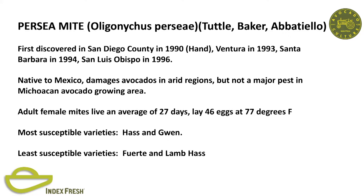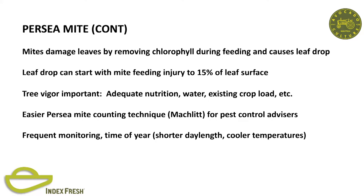The mite was initially ID'd as Peruviana, a known species. Dr. McMurtry noticed something different in the ID and realized he had made a mistake, then said this is a previously undescribed species. The mite damages leaves by feeding on chlorophyll. Leaf drop can occur at as little as 15% of the leaf surface, though I've seen leaves with far more damage without seeing leaf drop—that has to do with the nutritional levels of the tree, the health of the tree, other stresses like root rot or heavy crop load.